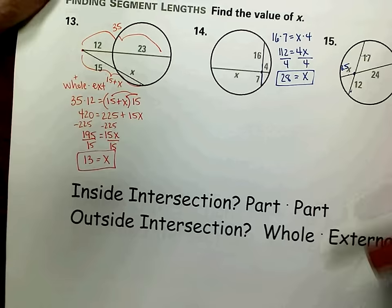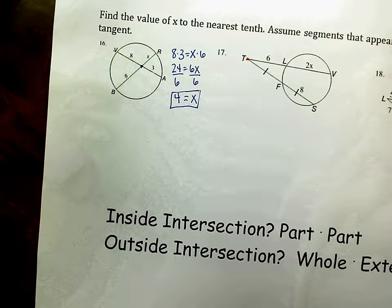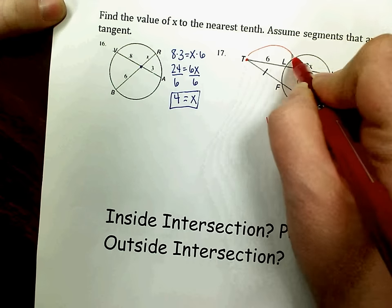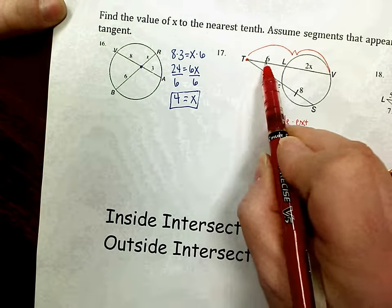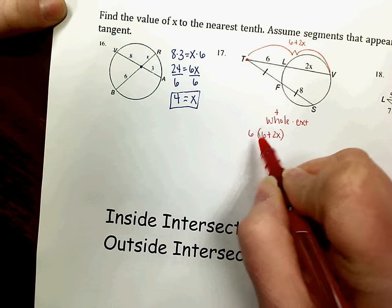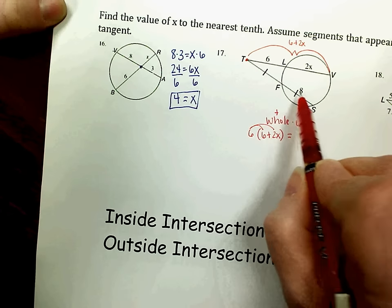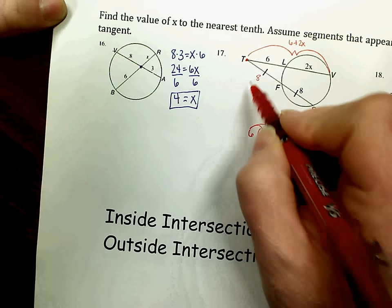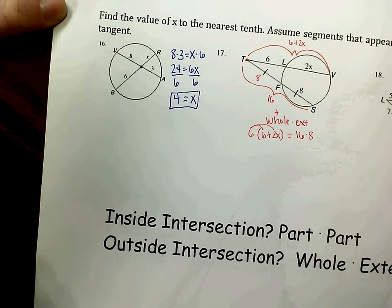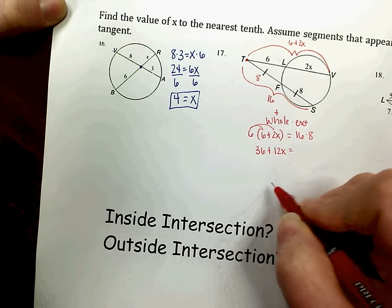The next outside intersection is number 17. We have two secants that intersect outside the circle, so again we have a whole times external relationship. For secant TV, when we find the whole length by adding, it's 6 plus 2x. We multiply that binomial in parentheses by the external part, which is 6, remembering to distribute. On the other secant, tick marks show congruence — if FS is 8, then TF is also 8. So the whole length is 8 plus 8, which is 16, times the external part of 8.